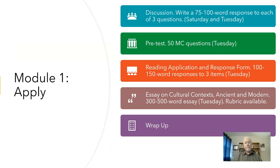Module 1 has an Apply section that outlines the work we need to do. There is, as usual, a discussion — you are being asked to write a 75 to 100 word response to each of three background reflection questions. It's an opportunity for you to think out loud and think together. Your initial post is due by the end of the day on Saturday, and then respond to at least two other students by the end of the day next Tuesday.